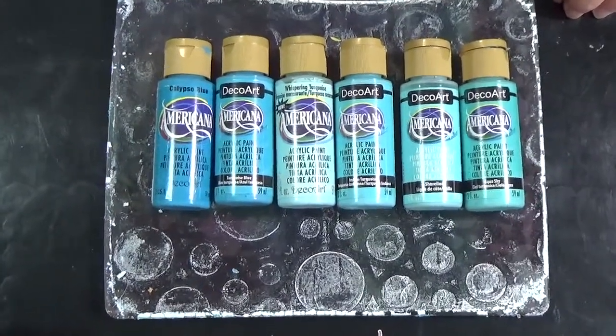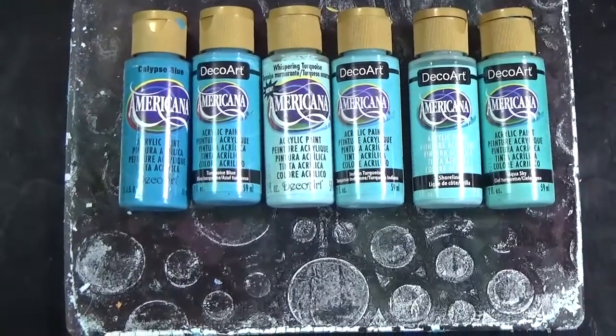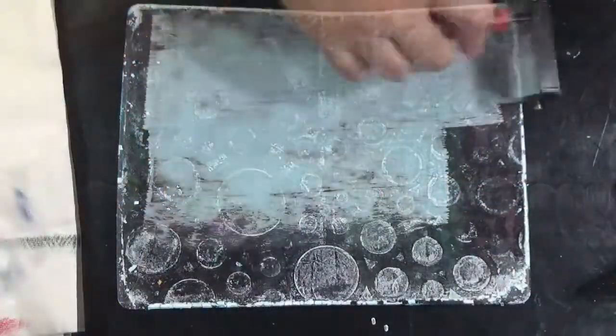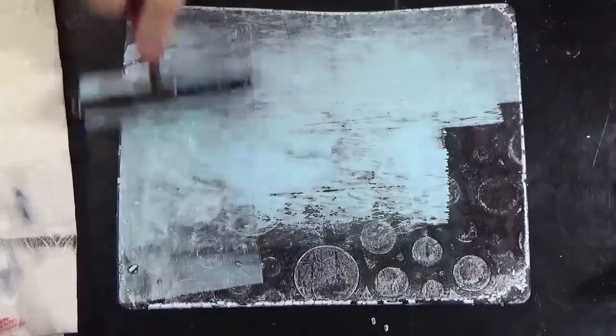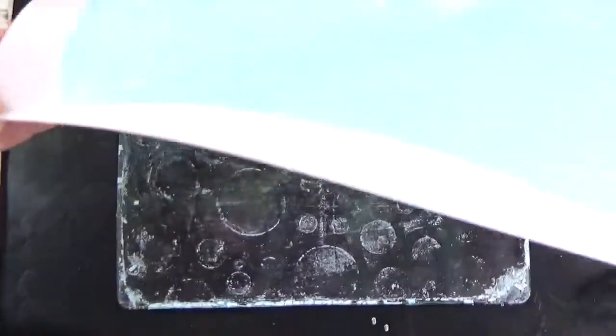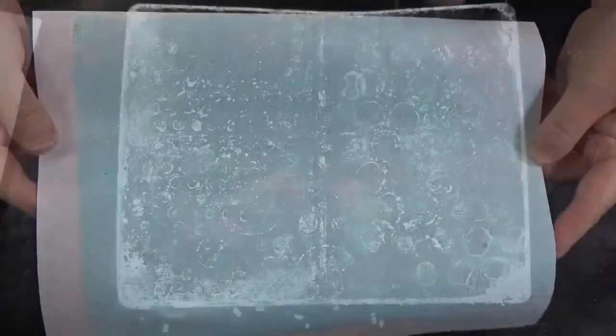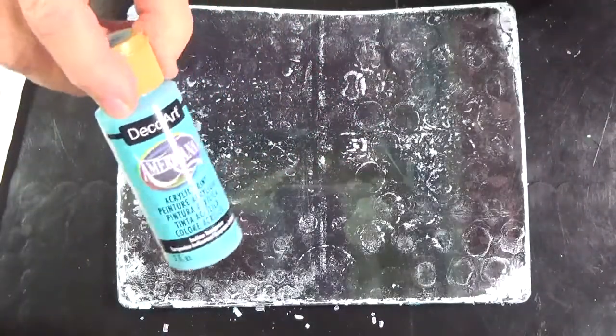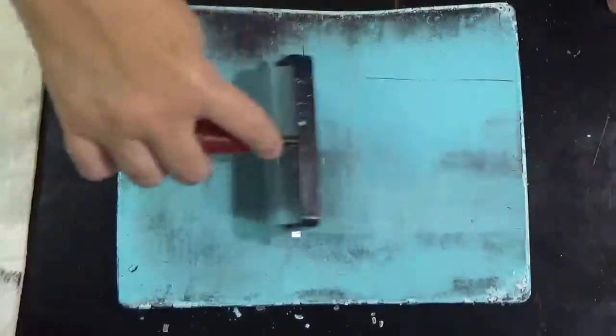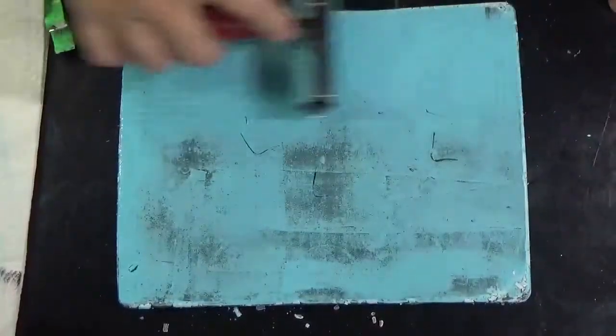We're going to do some printing with shades of blue using DecoArt Americana paint. First we're going to start with Whispering Turquoise. Notice that I still had some pattern left on my gel plate from a previous printing activity. I'm going to print on computer paper and pick up what little bit of pattern was left using just that Whispering Turquoise.